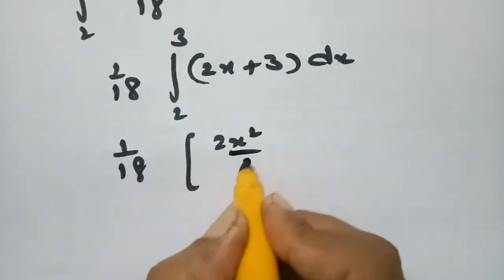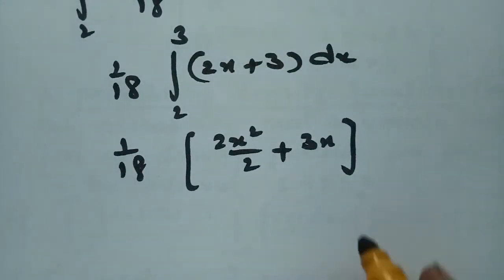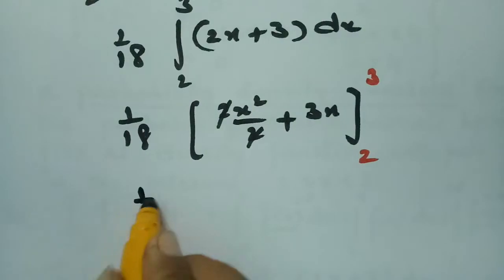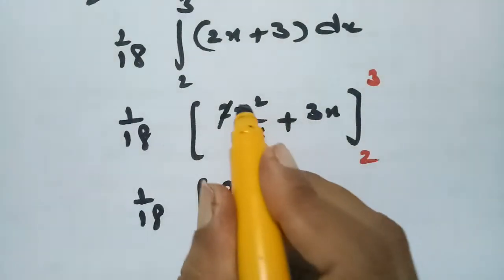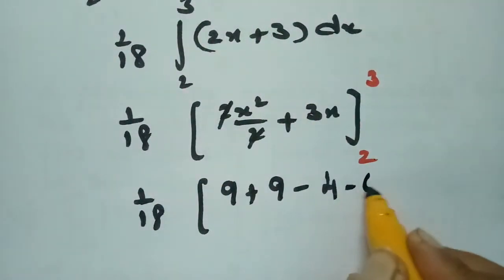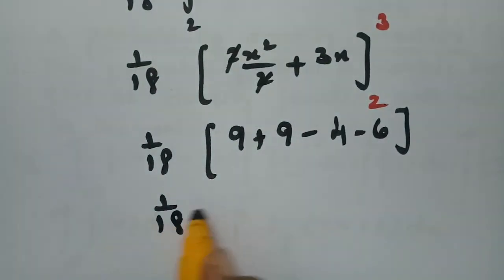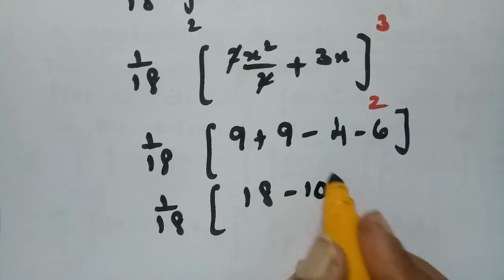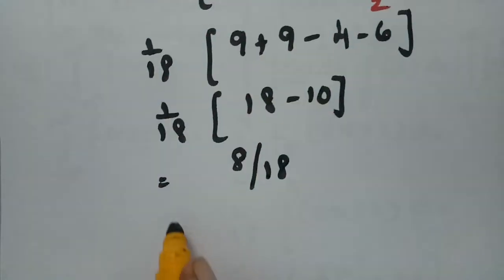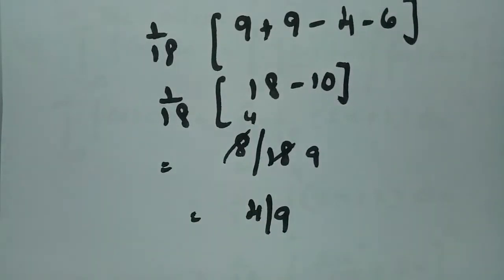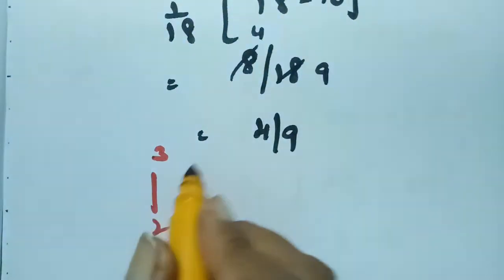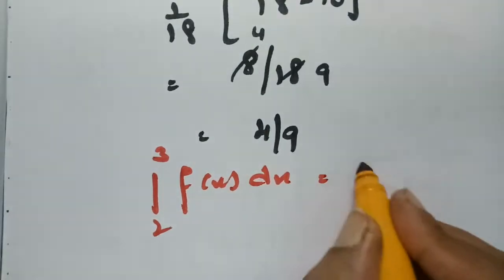Integrating, we get (1/18)[x² + 3x] evaluated between 2 and 3. Substituting the upper limit 3: 3² = 9, and 3×3 = 9, giving 18. For the lower limit 2: x² = 4, and 3×2 = 6, giving 10. So the result is (1/18)(18 − 10) = (1/18)(8) = 8/18 = 4/9. Therefore, the integral from 2 to 3 of f(x) dx equals 4/9.